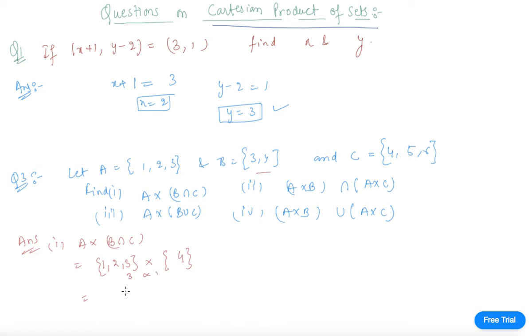There will be 3 elements in the result: {(1,4), (2,4), (3,4)}. This is the product A × (B ∩ C).